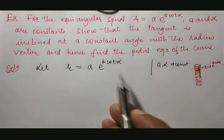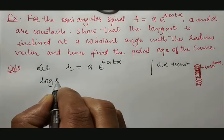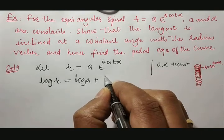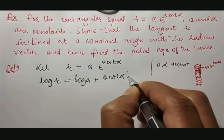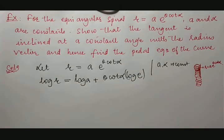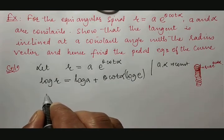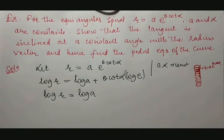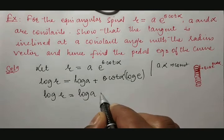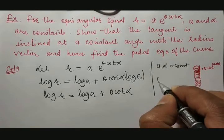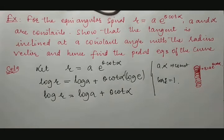Therefore, apply log on both sides: log r is equal to logarithm of a plus theta into cot alpha into logarithm of e, because the power becomes a multiplier. This simplifies to log r is equal to log a plus theta into cot alpha, because log e to the base e is equal to 1.